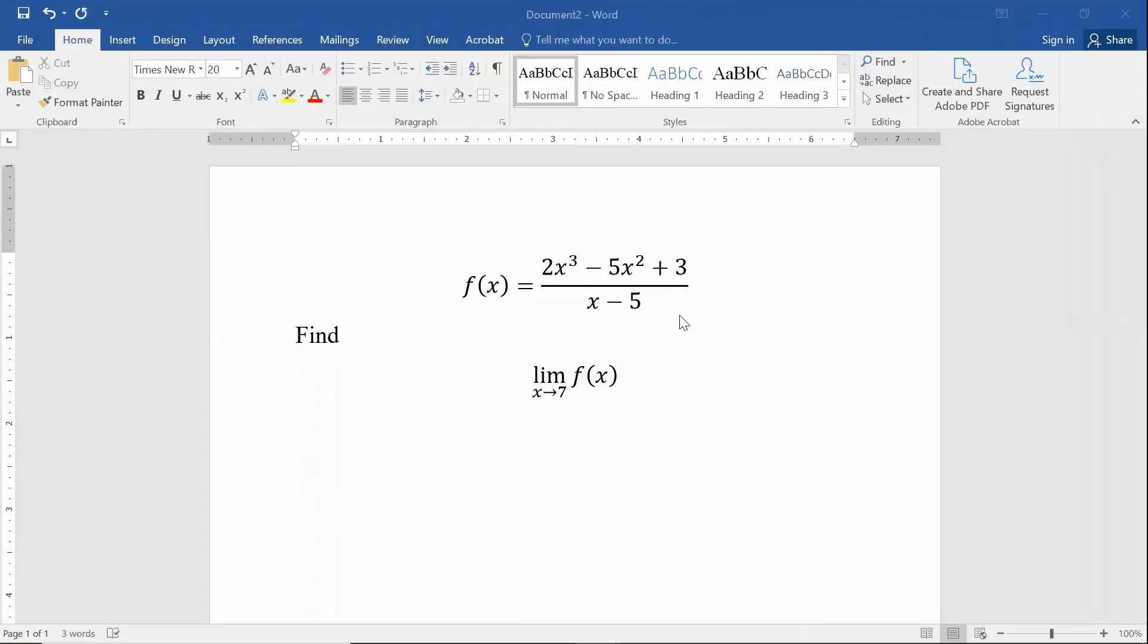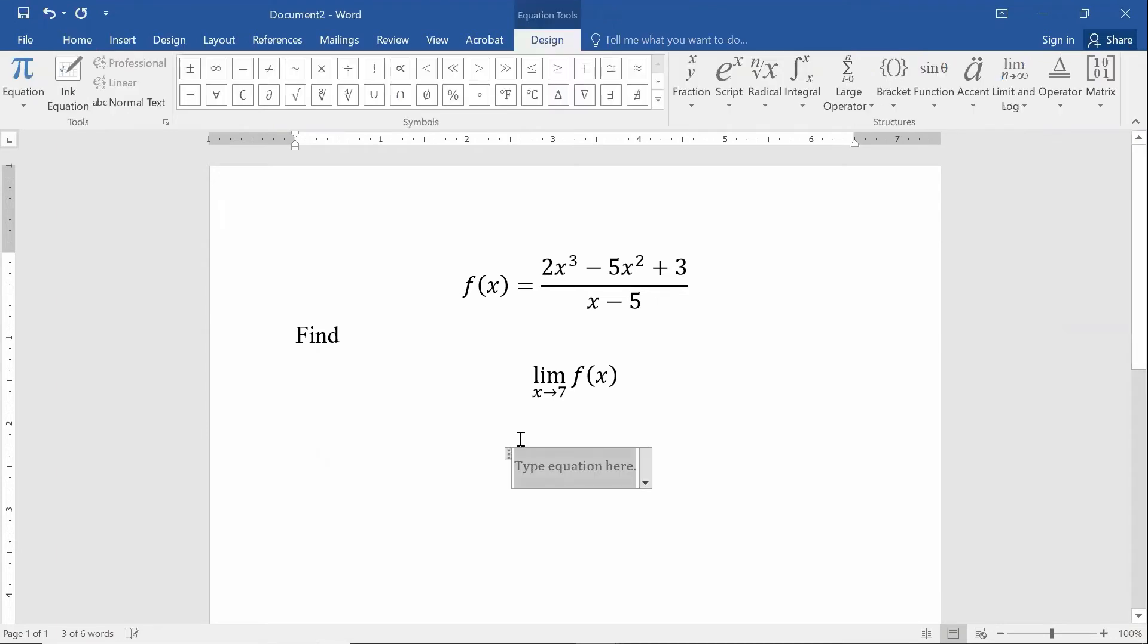So what I do, I have my function here, take the limit as x goes to 7 of that function. I need to check and make sure that when you plug in 7, you don't get zero in the denominator. I don't in this case. In fact, when I plug in 7 into the denominator, I'm going to get a 2. So that's good. And if I'm not getting zero in the denominator, then I can just simply plug in 7 in for each x and then evaluate that.